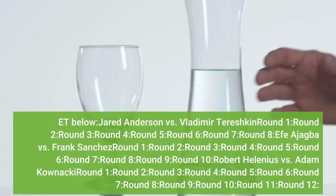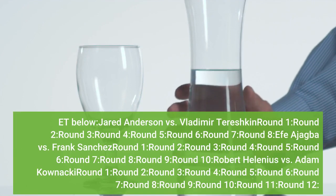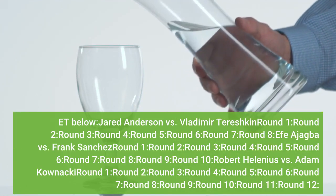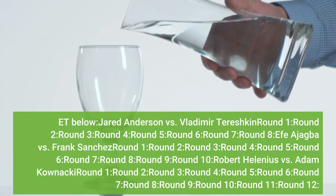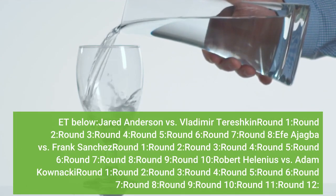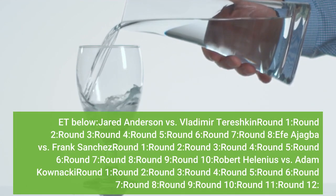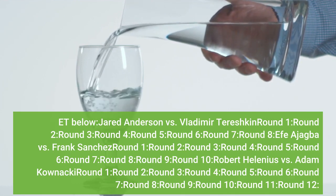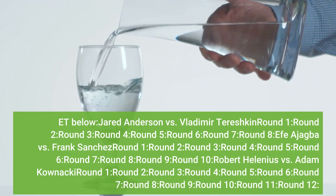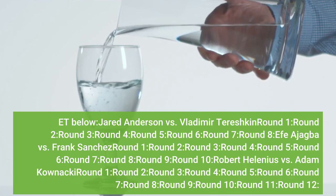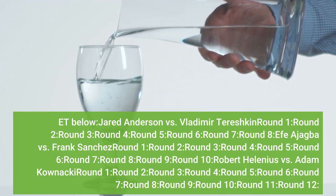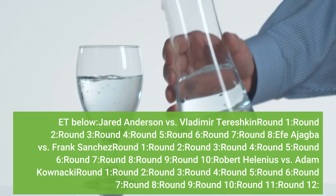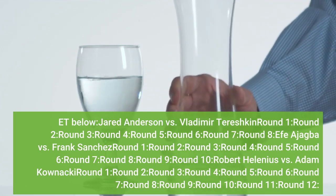Round-by-round updates: Jared Anderson vs Vladimir Tereshkin (rounds 1-8), A Fea Jogba vs Frank Sanchez (rounds 1-8), Robert Hellenius vs Adam Kaunaki (rounds 1-6).